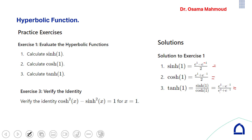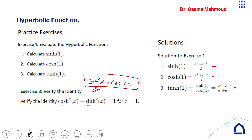To verify that cosh²(x) − sinh²(x) = 1: in trigonometry we have sin²(x) + cos²(x) = 1 (the Pythagorean identity). For hyperbolic functions the formula uses minus instead of plus because trigonometry involves an elliptic curve while hyperbolic functions involve a hyperbolic curve.